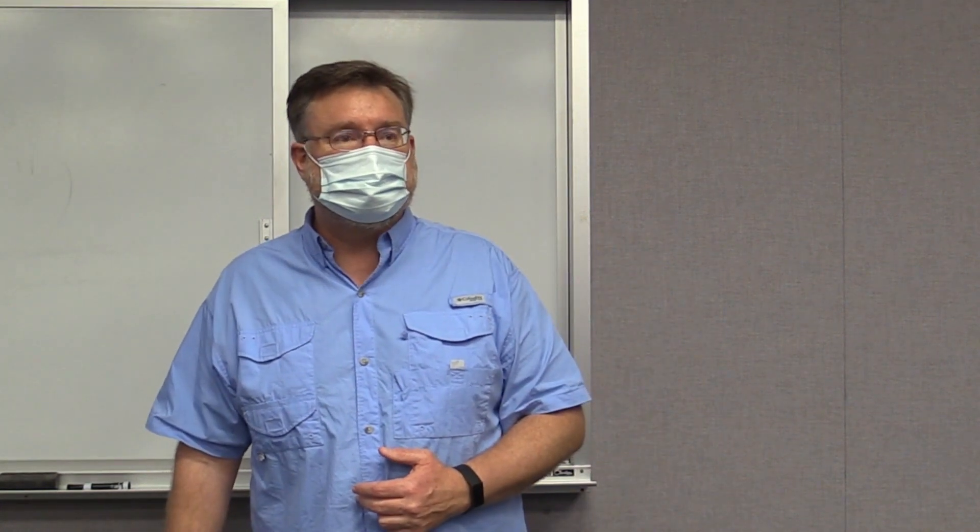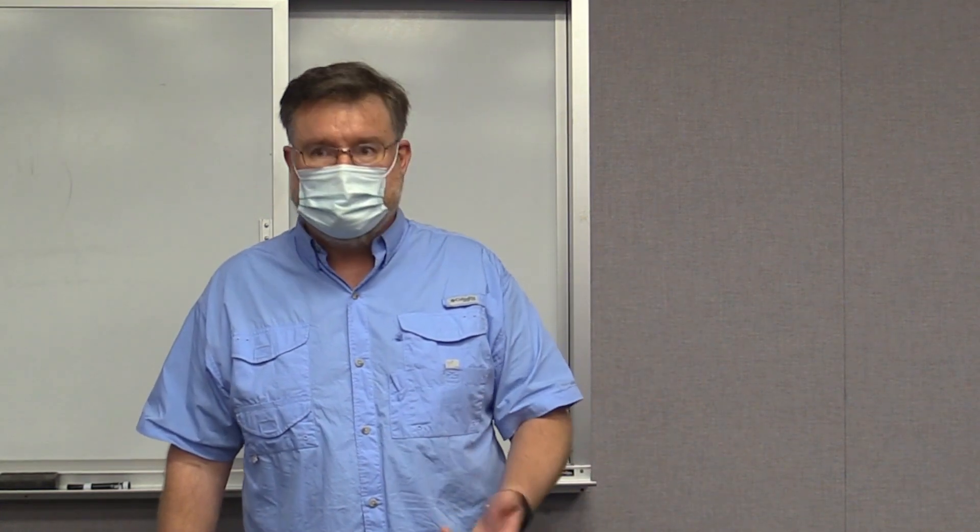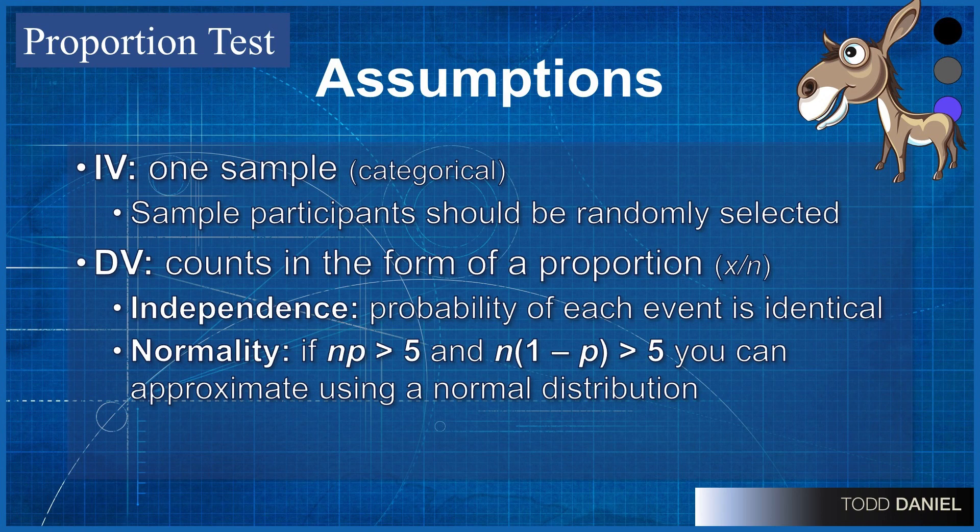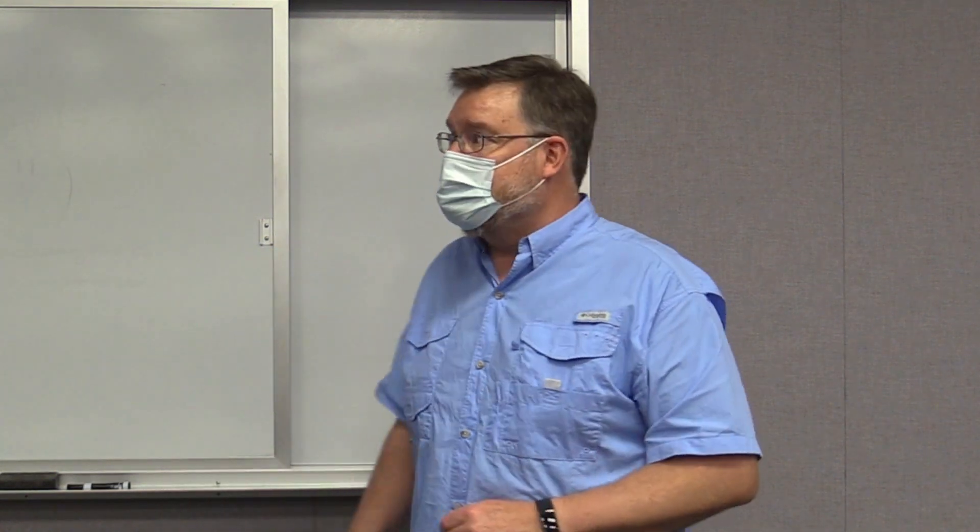There are certain assumptions for every test, and so let's see what those assumptions would be for a proportion test. Let's start with our independent and dependent variable. As we learned with a z-test and a t-test, we're still using one sample. Only this time, the dependent variable will be a proportion, so we need to have some kind of count data. Once we have that, we can calculate our proportion for our sample and compare that to our population.